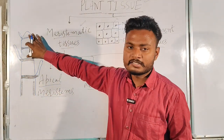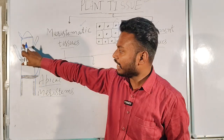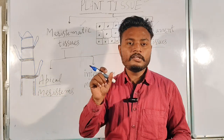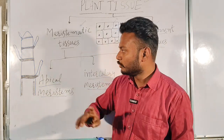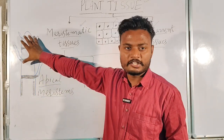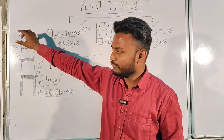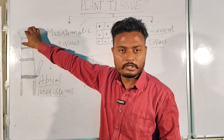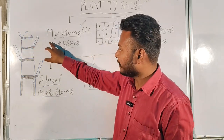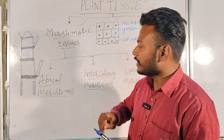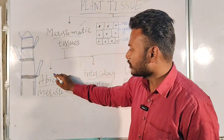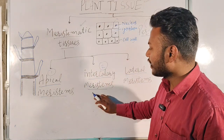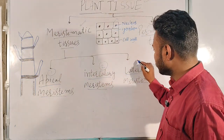Generally, meristematic tissue is found at different regions in plants — at the tip of the shoot or at the growing tip of the root — because these locations have very fast dividing cells and are very fast-growing points. Meristematic tissue is of three types: the first is apical meristem, the second is intercalary meristem, and the third is lateral meristem.